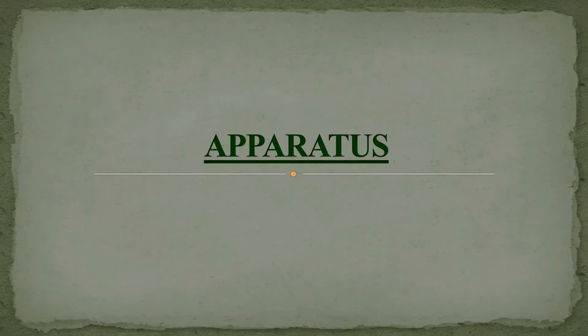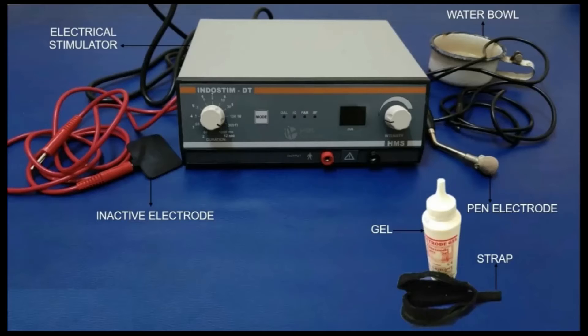Apparatus required for the RD test includes an electrical stimulator, inactive electrode, pan electrode, water bowl, gel, and straps.